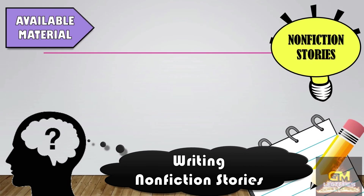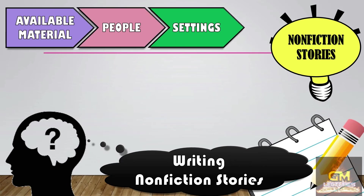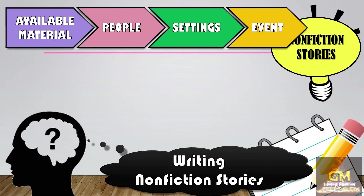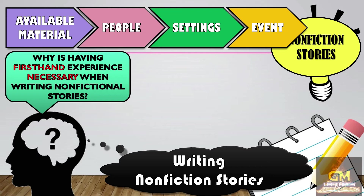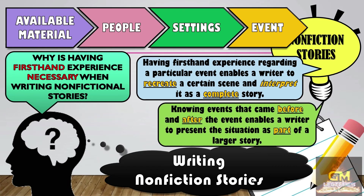When we talk about available material, this refers to the people who are involved, the settings — meaning the time and place where the particular event happened — and the event itself, meaning the details that led to that particular story. When writing non-fiction stories, it is important to answer this question: why is having first-hand experience necessary? Having first-hand experience regarding a particular event enables a writer to recreate a certain scene and interpret it as a complete story. Knowing the events that came before and after enables a writer to present the situation as part of a larger story. In other words, what we are after is accuracy of details — we have to present the details as accurately as possible in order to establish its authenticity.